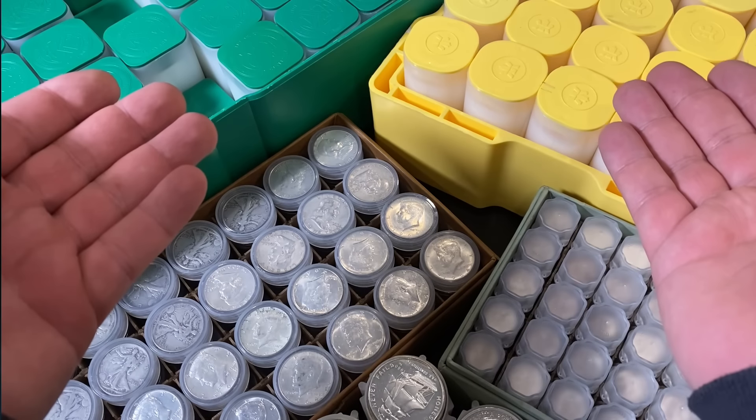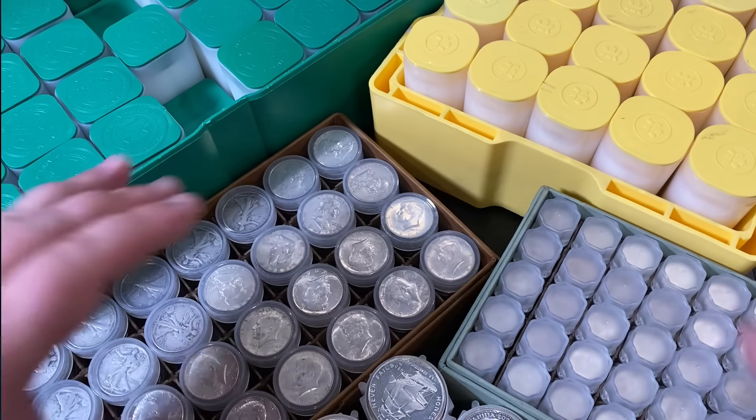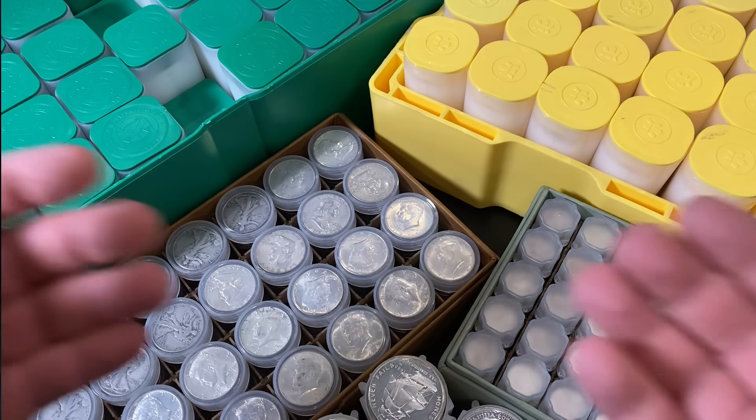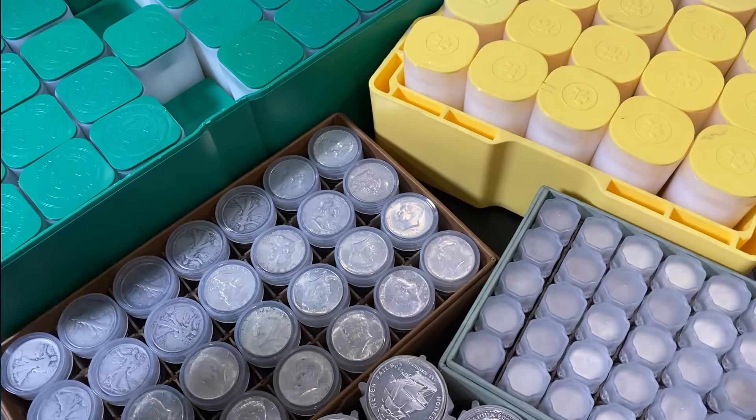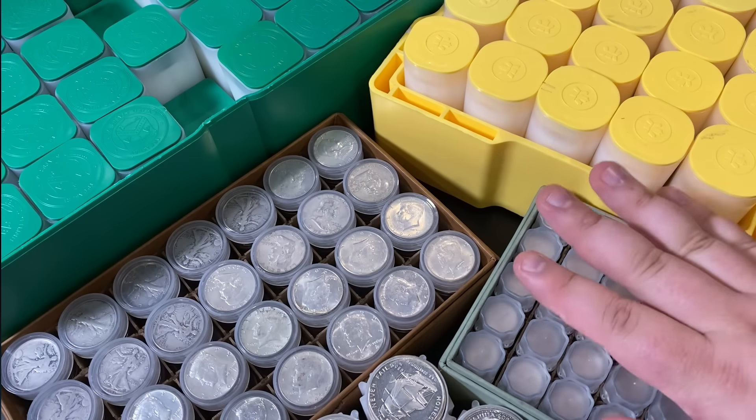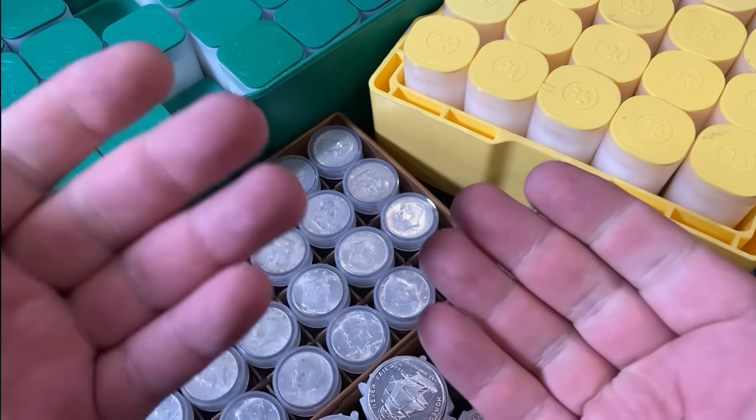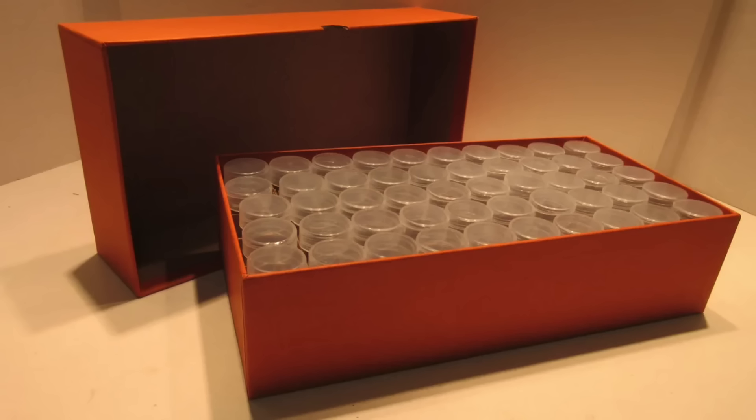So if you're looking for motivation to help you stack silver faster, these monster boxes are a great way to get that motivation. And if you want to stack junk silver, you can always purchase the Guardhouse boxes. You're just going to have to search for these online—I think they have them on eBay and a few other places. But these are for junk silver. I did one with the half dollars and I did one with the junk silver dimes as well.